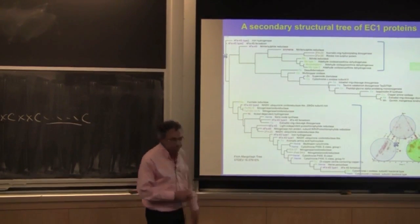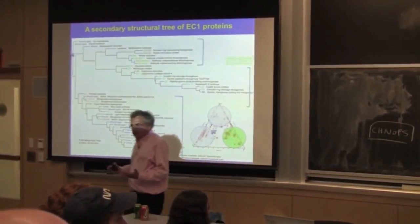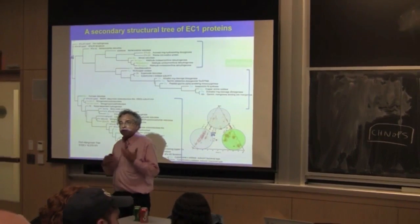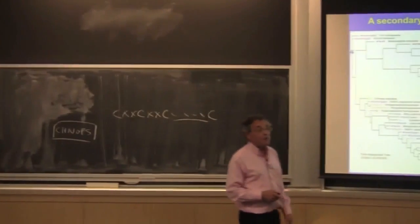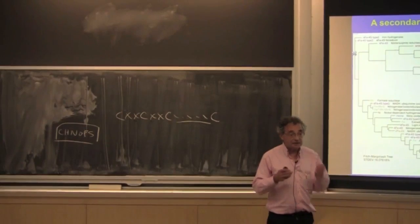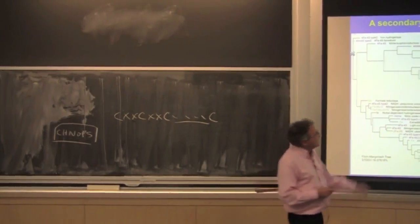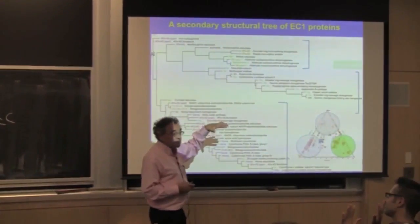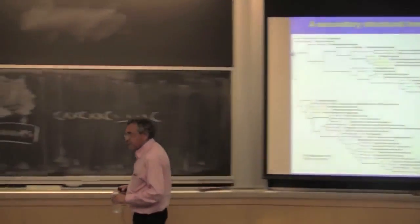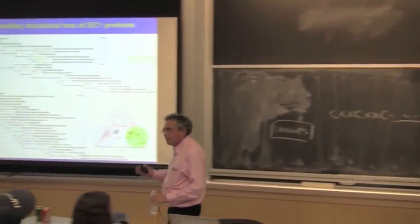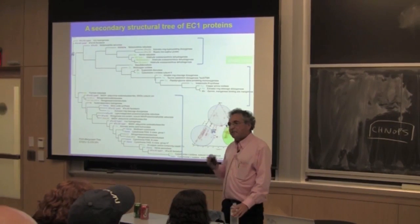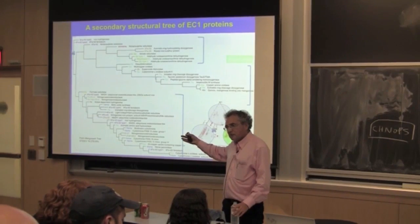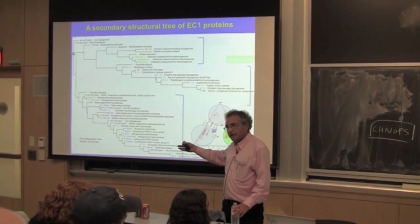Do I believe this phylogeny completely? No. I think it's a very good guidepost. What I think is missing is that the phylogeny of these proteins probably was not monophyletic — it didn't come from a single ancestral protein. To do that analysis, we worked on something else using a network approach, rather than sequences directly. And it would appear that we have 10 independent origins of the EC1 proteins over the last 4 billion years.